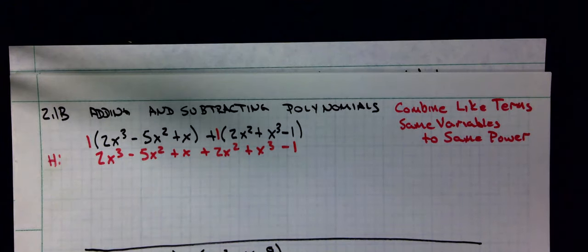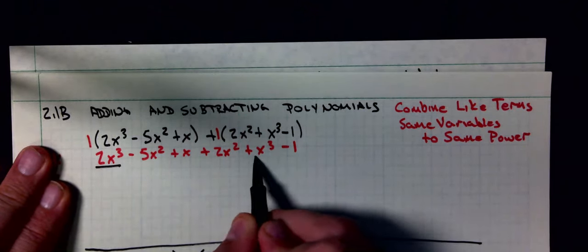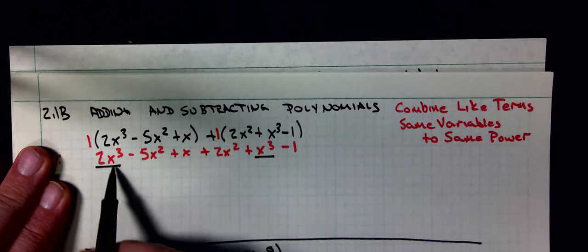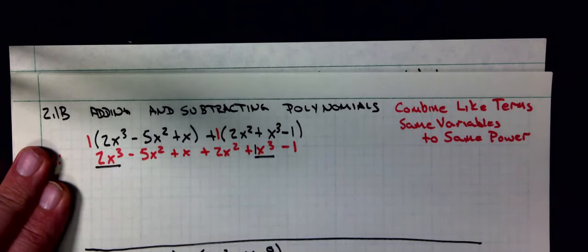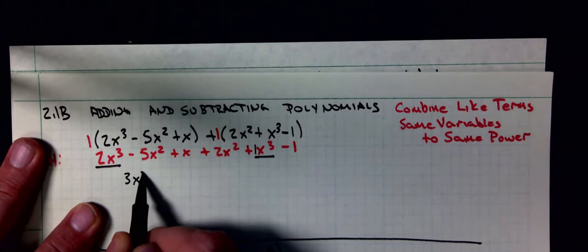Now what I'm going to look for are my like terms. Same variables. My variables are x's, but they're the same powers. And we want to typically write them highest degree next. So the first thing I have is some x cubes. I have 2x³ plus 1x³ gives me 3x³.